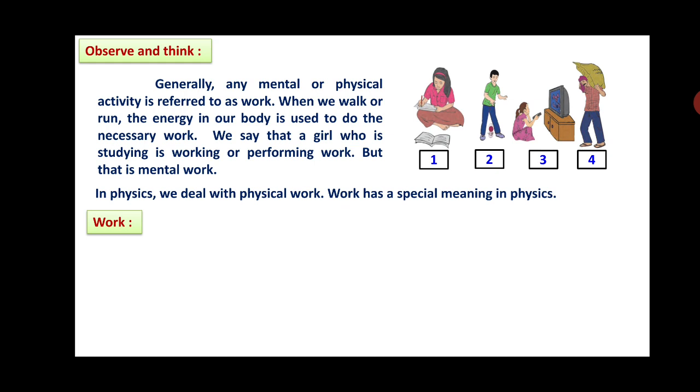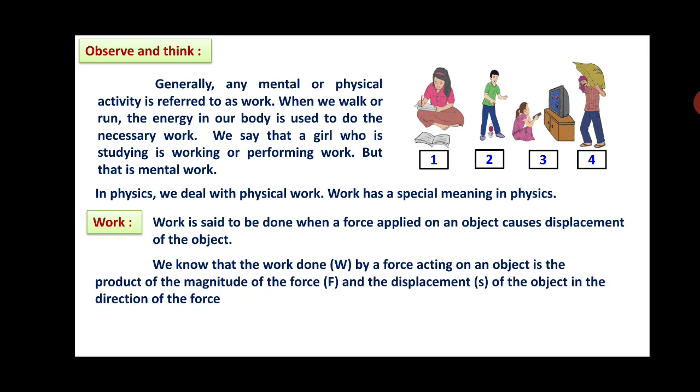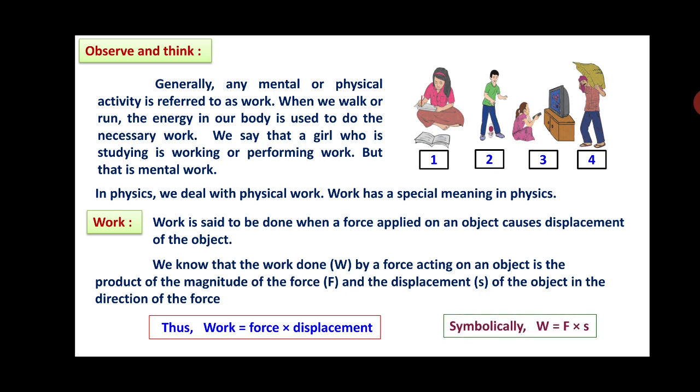Work is said to be done when a force applied on an object causes displacement of the object. We know that the work done W by a force acting on the object is the product of the magnitude of the force F and the displacement S of the object in the direction of the force. Thus we can write work equals force into displacement. Symbolically, W = F × S, where W is the work done, F is the force, and S is the displacement.